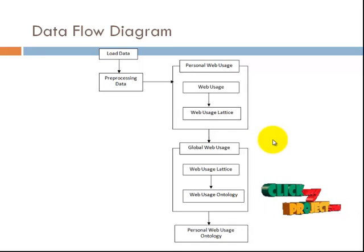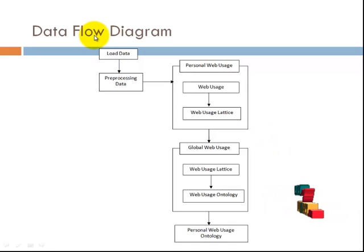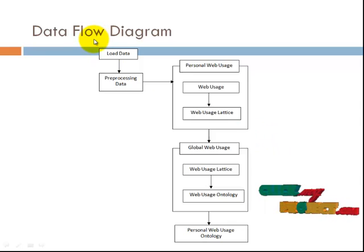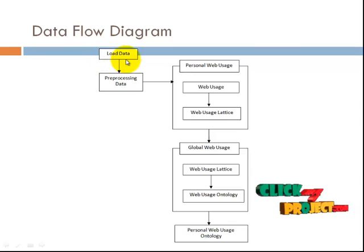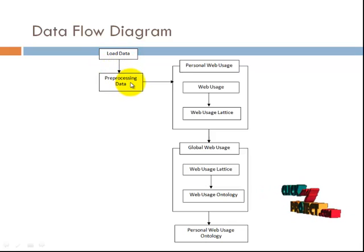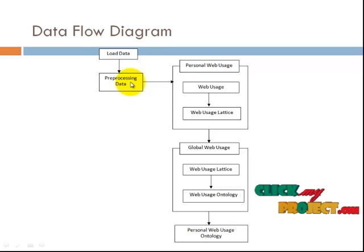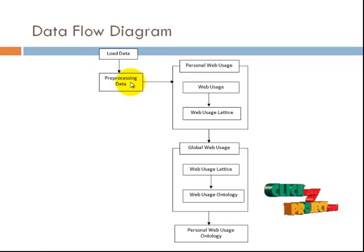This is our flow diagram. Initially, we load the web usage log in the load data phase. After that, we preprocess the data — in preprocessing, we delete unnecessary data like 404 not found page URLs and similar errors.